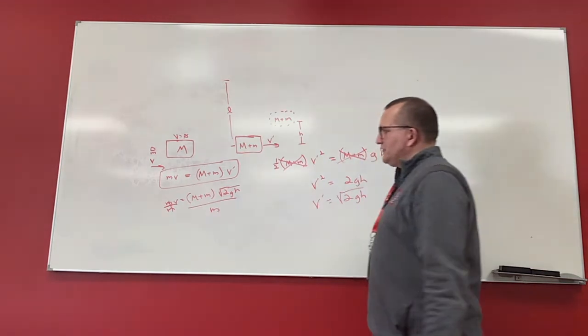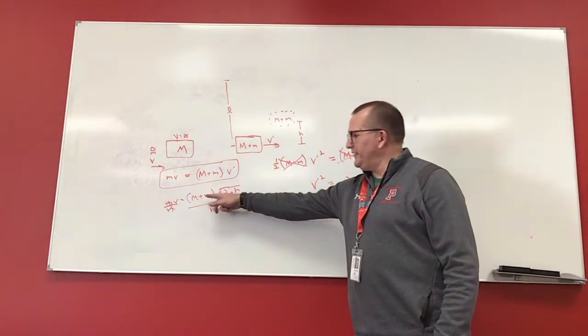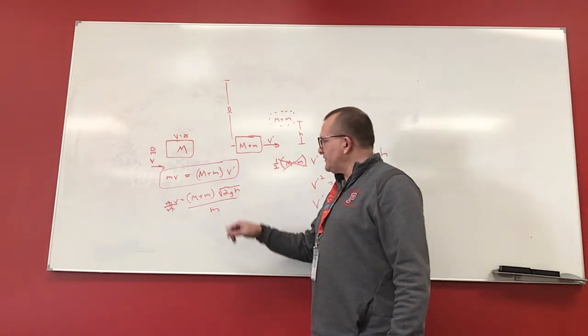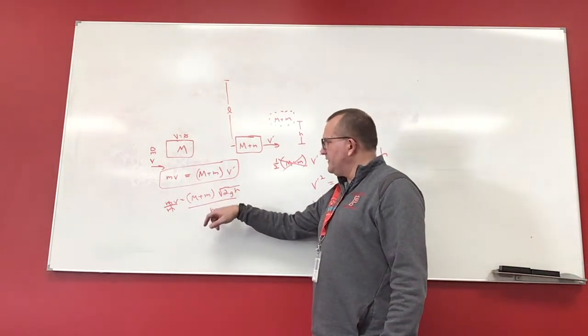So my initial velocity in terms of how high it goes is going to be this. And this is a ballistic pendulum equation. So V is equal to (m + M) times the square root of 2GH divided by the mass of our bullet.